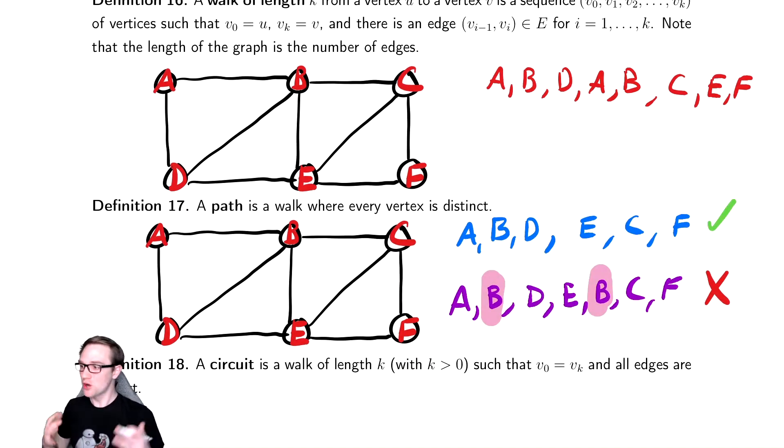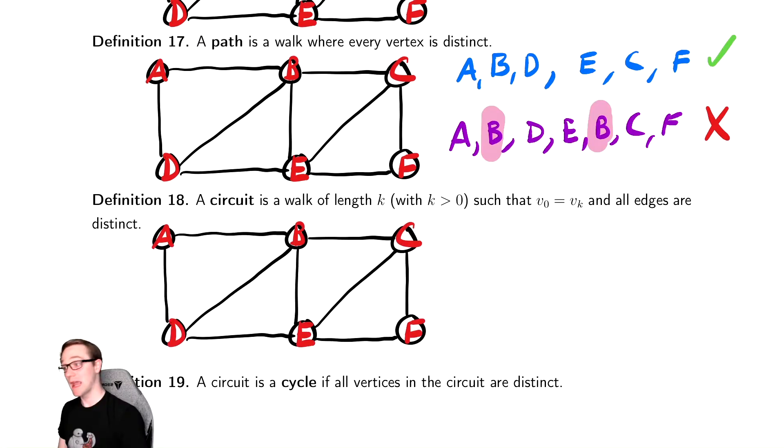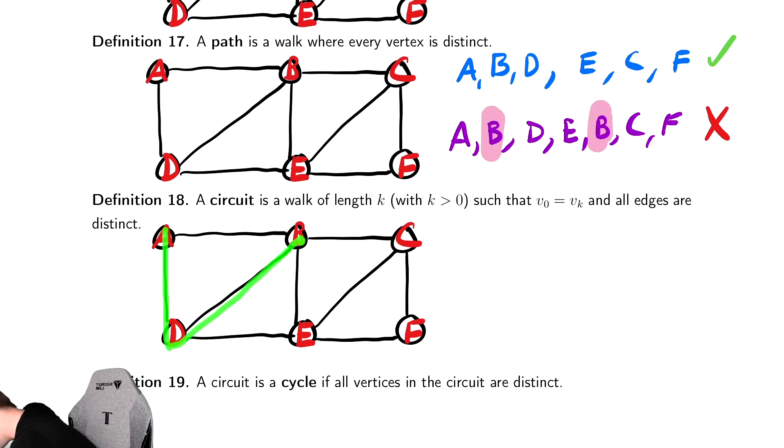Let's next talk about a circuit. It's the walk equivalent of a way of going in a circle. So in that same graph, an example of a circuit might be A, B, E, F, C, B, A. So let's write that down.